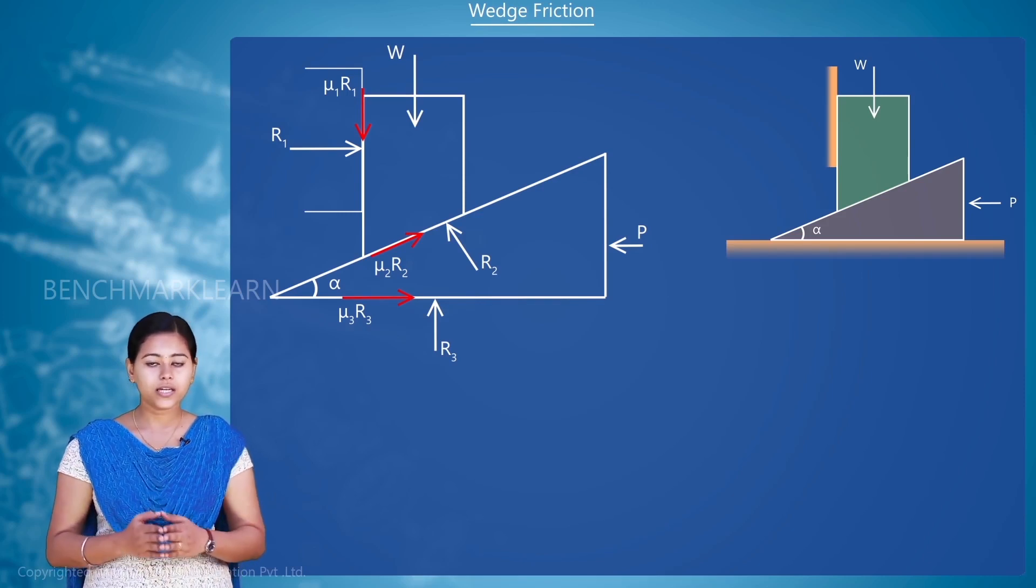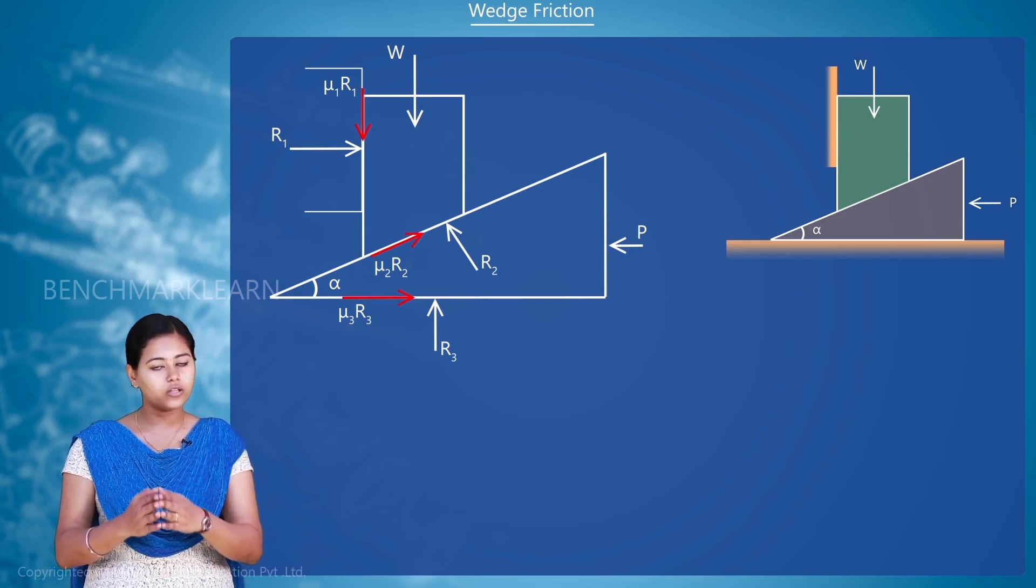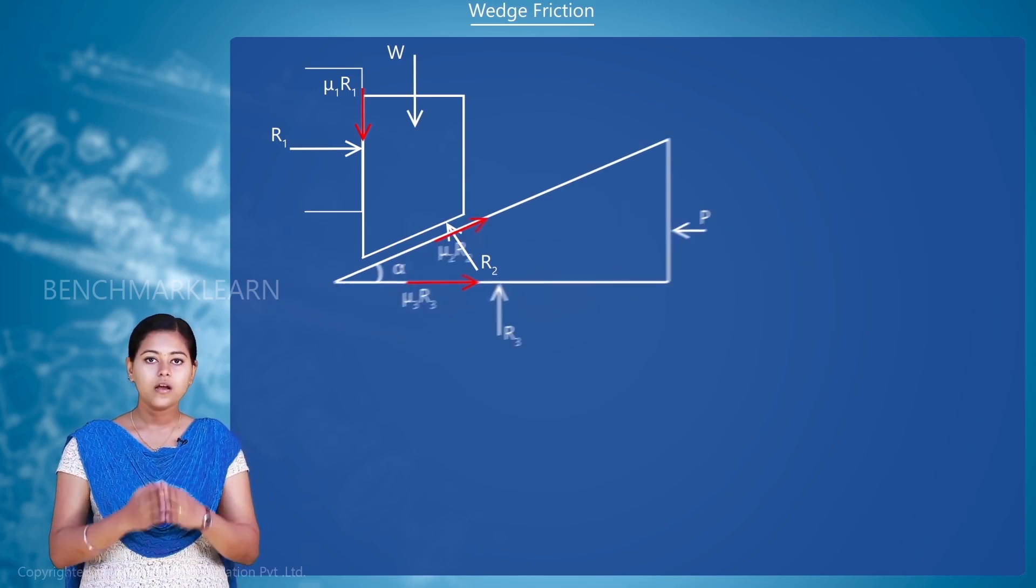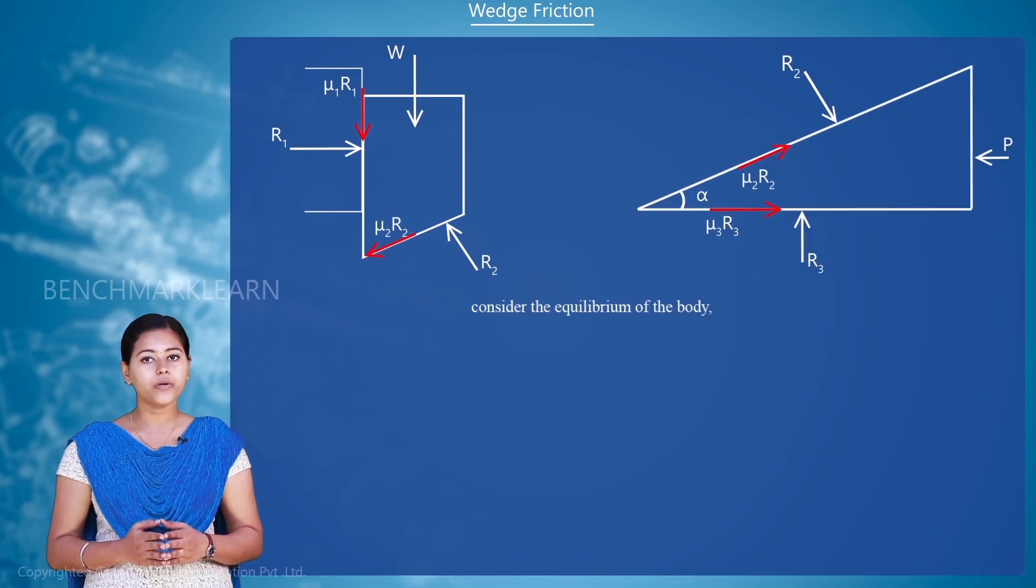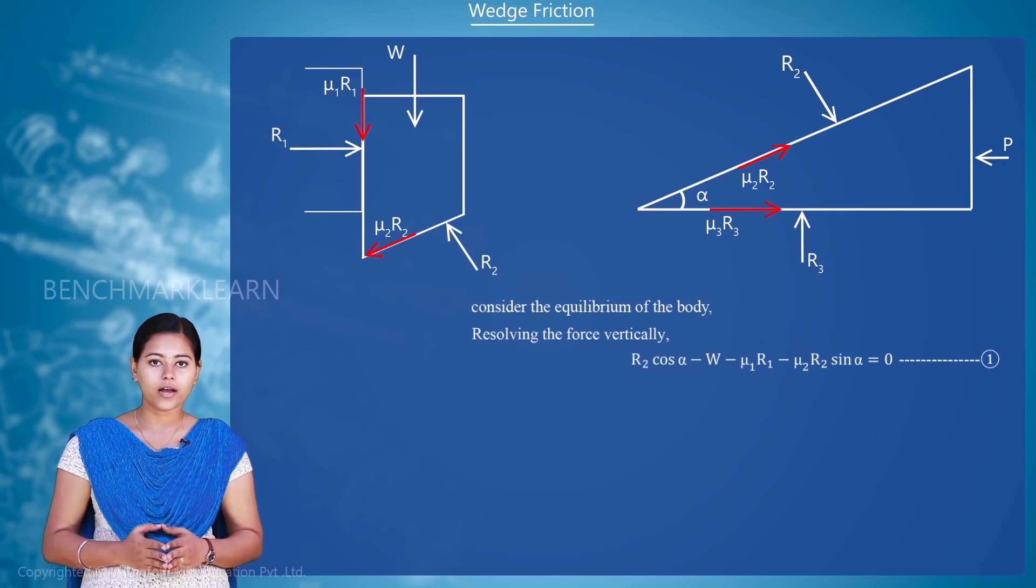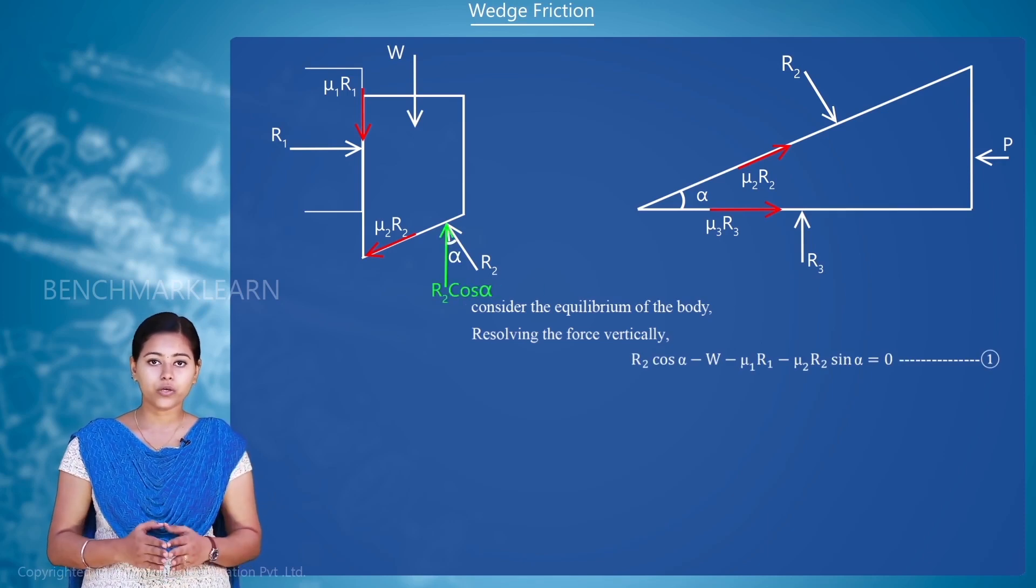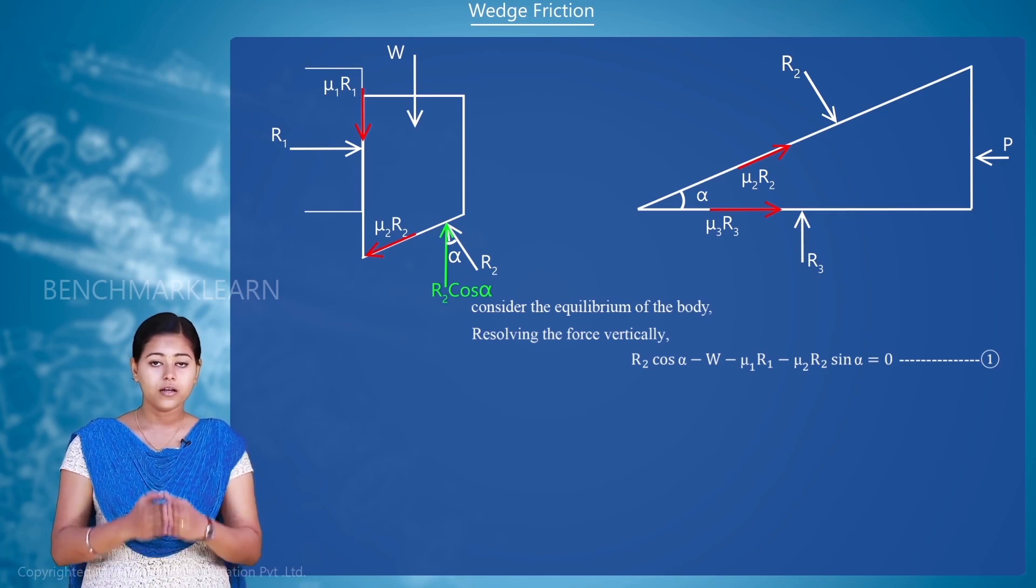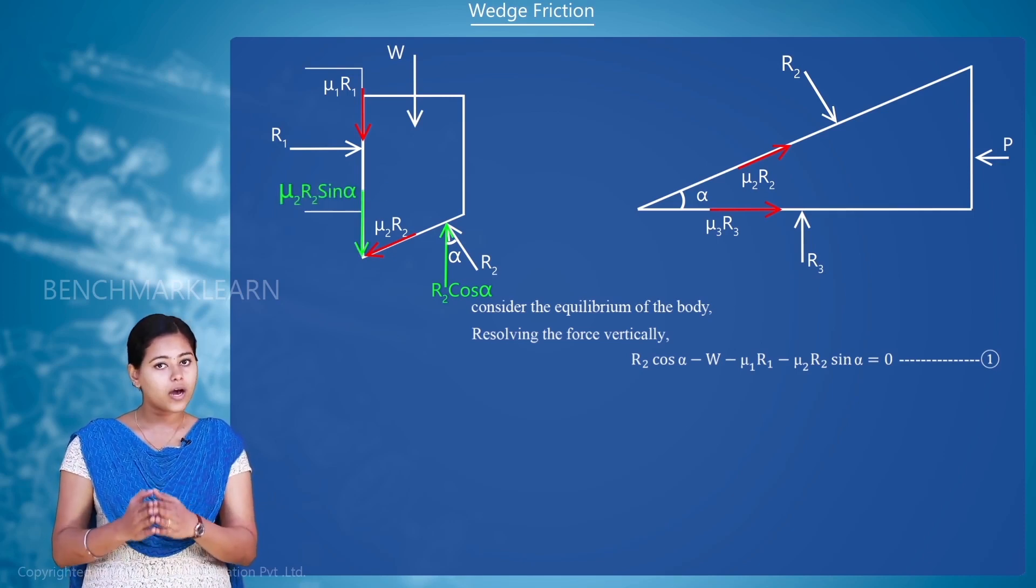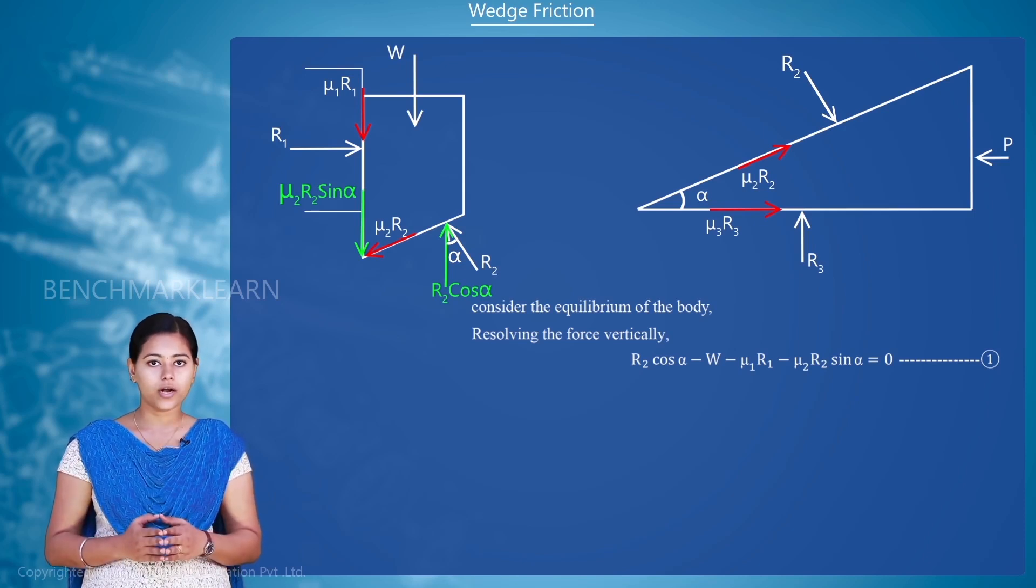So, these are the reactions and the forces acting on the wedge as well as on the lifted body. Now, consider the equilibrium of the body. Resolving the vertical forces, we can write R2 cos alpha minus W minus mu1R1 minus mu2R2 sin alpha equal to 0. Mark it as equation number 1.